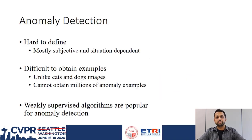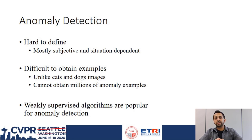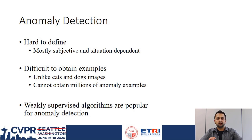Anomaly detection is a challenging problem, mostly because of the fact that it is extremely subjective. Something normal for one person might not be normal for another. While this problem might be solved by developing a consensus among humans, there is another major issue which makes it hard for the algorithms to learn to detect anomalies.